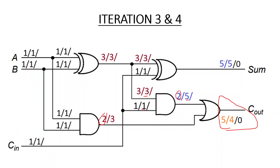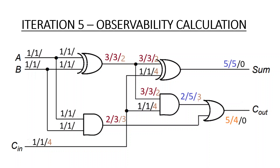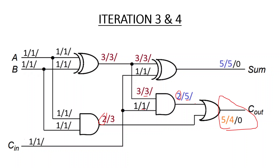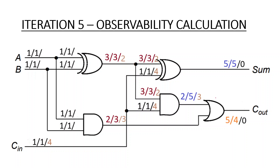Now we calculate the remaining observabilities. For a signal line feeding into an OR gate, it can be observed by setting the other input to zero. Since the observability of the OR gate output is zero, CO = 0 + CC0(other input) + 1 = 0 + 2 + 1 = 3.